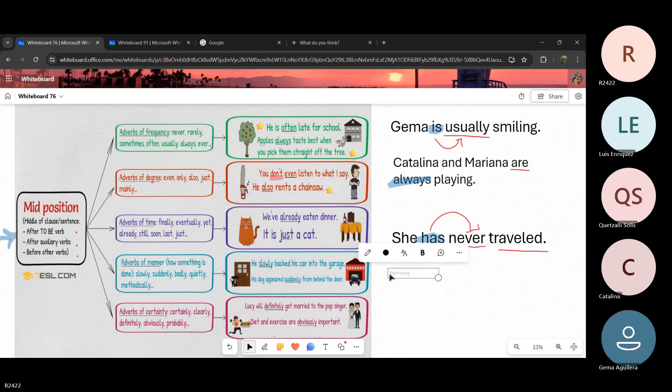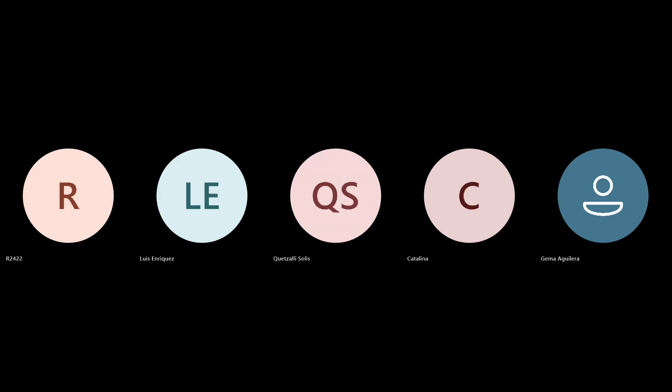Hola, disculpen. Es que se me fue la luz y pues se acaba de regresar. ¿Me escuchan? Yes. Ok, disculpen. Retomando esto rápido antes de terminar la clase. Tenemos este siguiente ejemplo: They have always eaten pizza. ¿Cuál sería el auxiliar en esta oración? Have. ¿Y cuál sería el adverbio? Always. Muy bien. Ya sabemos el siguiente uso: un adverbio que lo podemos encontrar después de un verbo auxiliar. ¿Hasta aquí está todo claro? Sí, teacher.